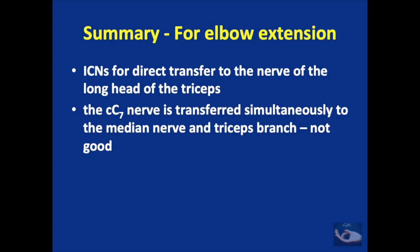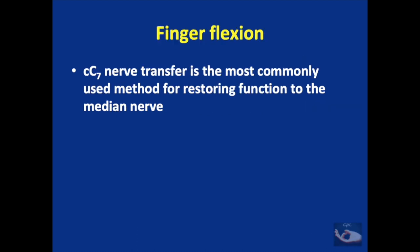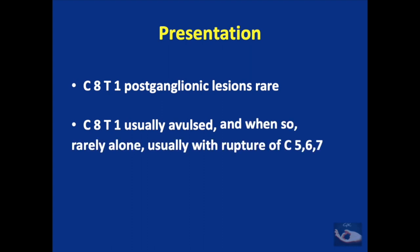In stage 3, one year after stage 2, wrist fusion is performed; and in stage 4, tendon transfers improve hand function for grasping and shoulder fusion is done if the shoulder is unstable. For elbow flexion, the phrenic nerve, intercostal nerves or contralateral C7 — neurotized to both the median and musculocutaneous nerves — can be transferred. For shoulder function, the spinal accessory can be transferred anteriorly to the suprascapular nerve or posteriorly, and intercostal nerves can be transferred to the axillary nerve. For elbow extension, intercostal nerves to the nerve of the long head of the triceps or contralateral C7 simultaneously to the median nerve and triceps branch can be used. For C8-T1 lesions, ruptures are very rare and are usually avulsed, typically in association with rupture of C5-6 or C7 roots.